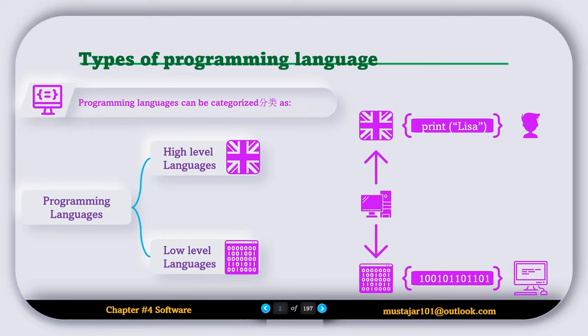That's why every high-level language code is translated into machine code so the computer can understand and run it. This way, the programming becomes easier for people while the computer can still run the code.